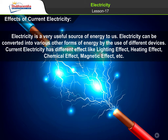Effects of current electricity: Electricity is a very useful source of energy to us. Electricity can be converted into various other forms of energy by the use of different devices. Current electricity has different effects like lighting effect, heating effect, chemical effect, magnetic effect, etc.